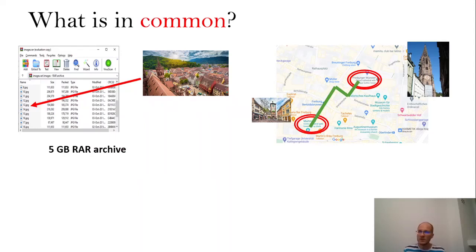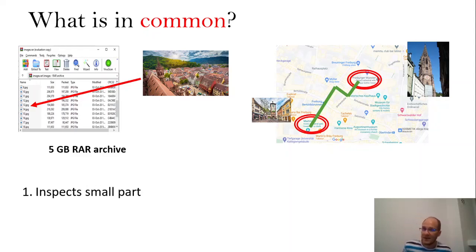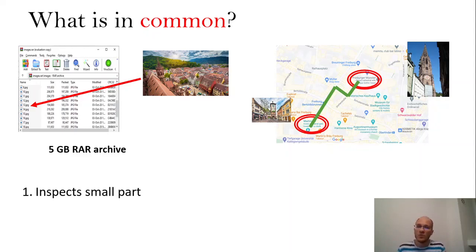So the question is: what is common to these two scenarios? In one case we have file decompression, in the second case we have navigation through cities. The first commonality is that in both cases we have some potentially large underlying structure, and we look at only a small part of this structure to figure out what we want to do. Like in the case of maps, there are so many streets, but we looked only at a couple of streets surrounding these two places in order to find the green path.